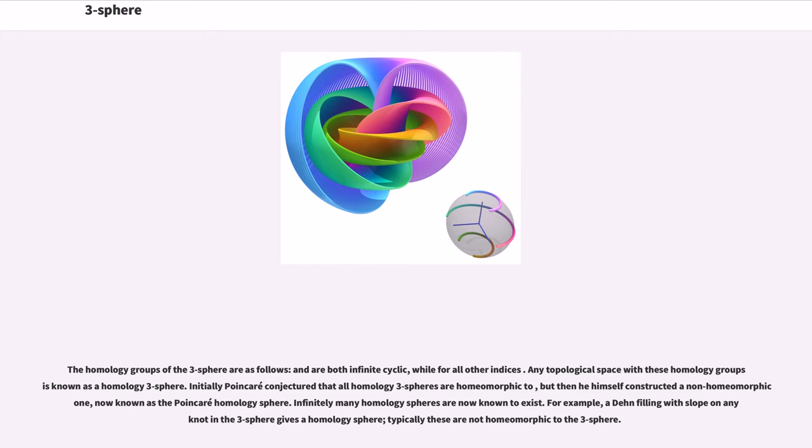any topological space with these homology groups is known as a homology three-sphere. Initially Poincaré conjectured that all homology three-spheres are homeomorphic to, but then he himself constructed a non-homeomorphic one, now known as the Poincaré homology sphere. Infinitely many homology spheres are now known to exist. For example, a Dehn filling with slope on any knot in the three-sphere gives a homology sphere,